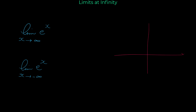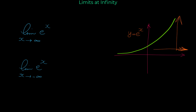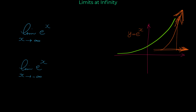I highly recommend you memorize the graph of the exponential function e to the x. The graph of e to the x looks like this. As you can see from the graph, when we go far to the right — when x approaches infinity — the y value of this function goes to infinity. So the limit of e to the x when x approaches infinity is infinity.